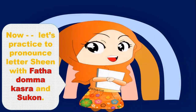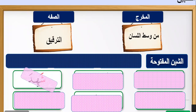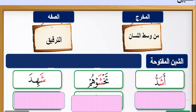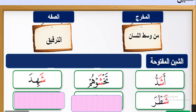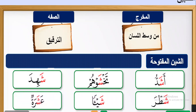Now let's practice to pronounce letter Sheen with fatha, dhamma, kisra, and sukun. Number one: Sheen with fatha. Please repeat after me — Sheen fatha: sha. Shahidah, takhshawuhum, ashaddu, shatara, shay'an, asharatun.